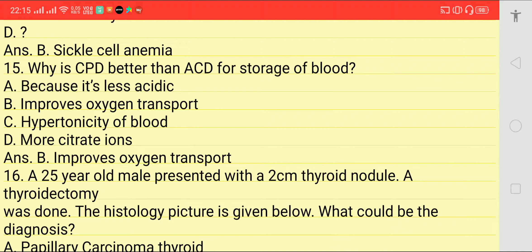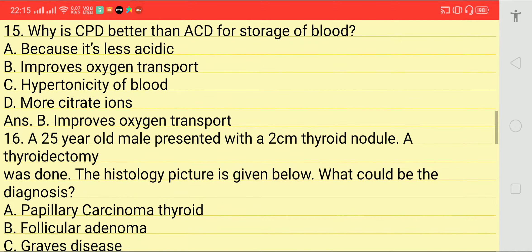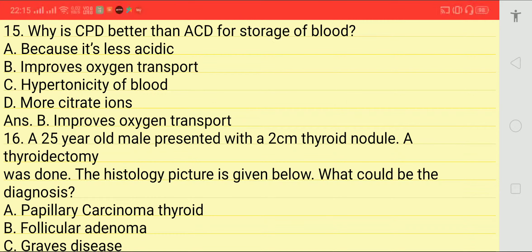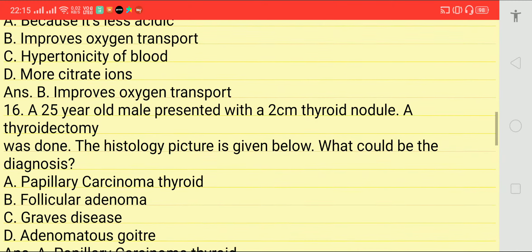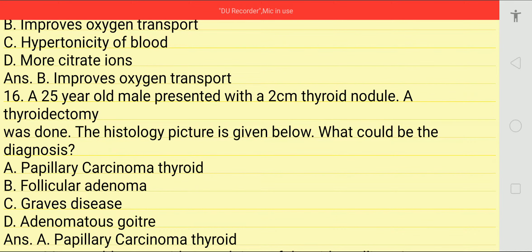Next question: why is CPD better than ACD for storage of blood? Options: it is less acidic, improves oxygen transport, hypertonicity of blood, or more citrate ions. Answer is B — improves oxygen transport.